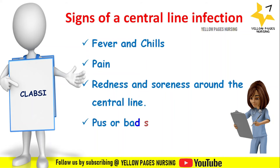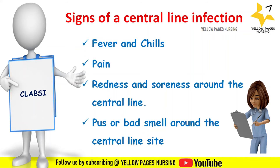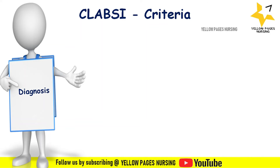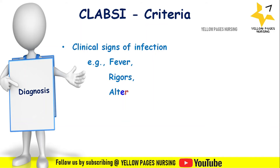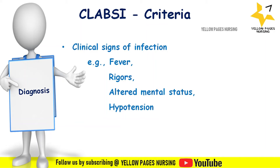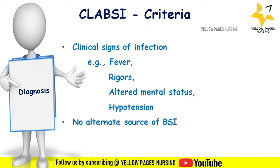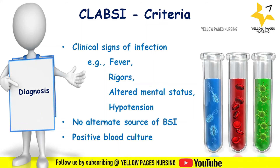Signs of a central line infection include fever and chills, pain, redness and soreness around the central line, and pus or bad smell around the central line site. CLABSI criteria requires all three: clinical signs of infection such as fever, rigors, altered mental status, or hypotension; no alternate source of bloodstream infection; and a positive blood culture from a peripheral line or central line, with the central line tip culture showing the same organism.